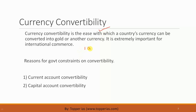Now, suppose I have 1 crore rupees in my account and I want to import something from the US with this money. So, I will go to the RBI saying that please convert my 1 crore rupees into dollars because I will have to make a payment in dollars. The ease with which this money is converted into dollars is what is currency convertibility.